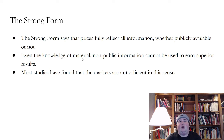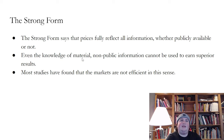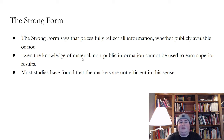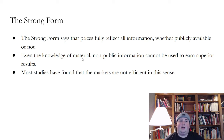Finally, the strong form says that prices fully reflect all information, whether publicly available or not. Even knowledge of material non-public information cannot be used to earn superior results. Most studies have found that markets are not efficient in this sense. Do we think that prices fully reflect all public and private information? If the CEO knows something — say, he's decided he's going to acquire a company for $10 billion in a month and pay a 50% premium over the current market price — do we think that the market price of the target goes up by 50% the second the CEO decides that?